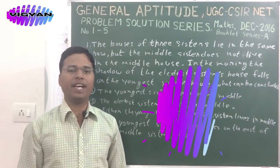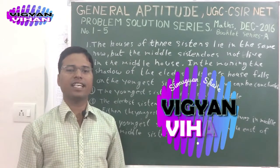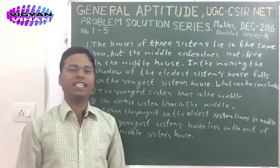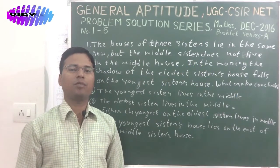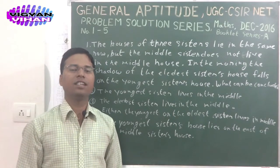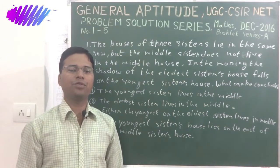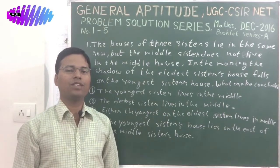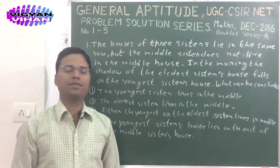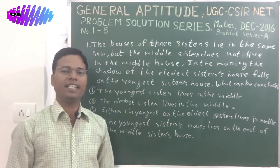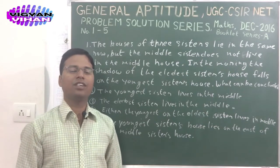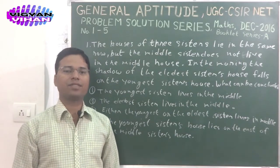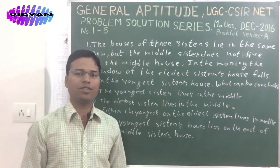The general aptitude part plays a vital role in UGC CSIR NET paper. After watching our videos, you will get a better understanding about problem solution aptitude. It would be helpful for you. After watching our videos, you will be able to solve the general aptitude problems with efficiency and accuracy. So keep watching our videos. Don't forget to subscribe our channel. Let's start the problem solution.